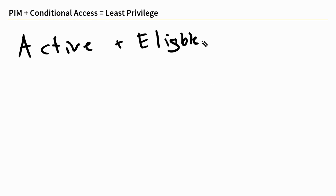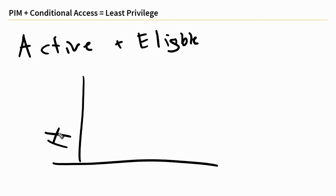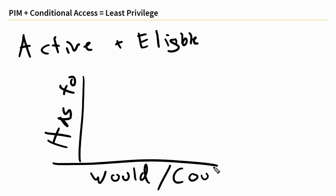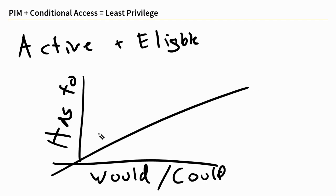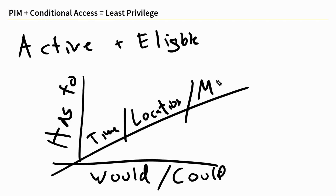So we're going to use PIMR, or a service similar to that, which allows us to specify not only our active permissions, but also our eligible permissions. And then we can add an entirely other method of managing this concept of least privilege by adding things like conditional access. Now we have this matrix of active permissions and eligible permissions, and then we're going to add a z-axis that can include time, location.